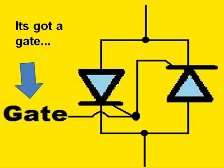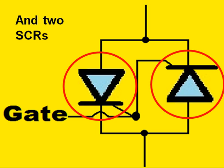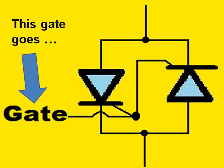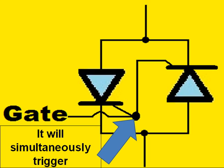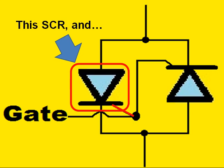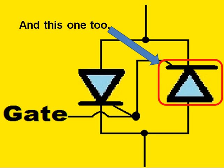It's got a gate and two SERs. This gate goes here and it connects to both SERs. It will simultaneously trigger this SER and this one too.